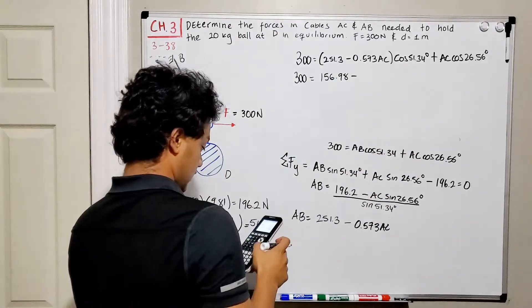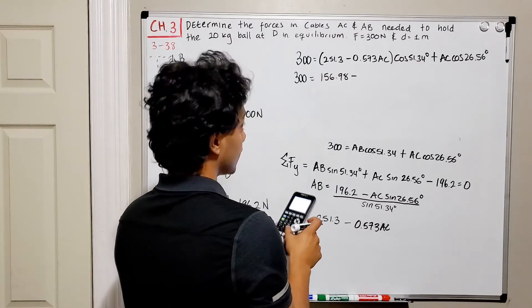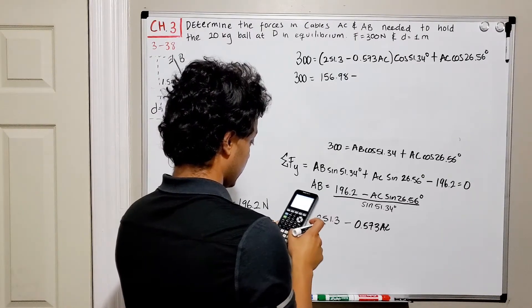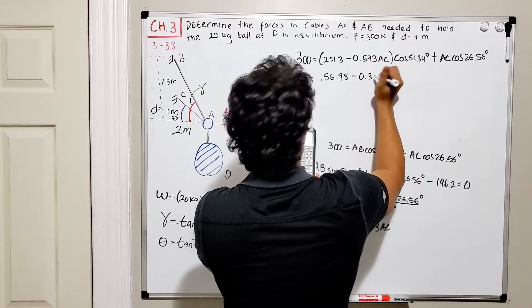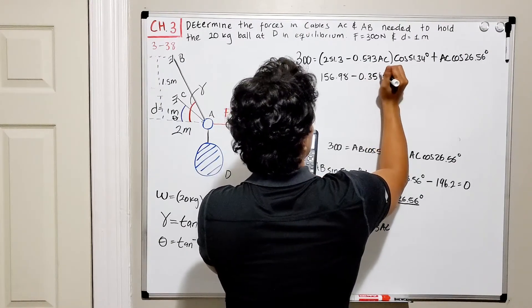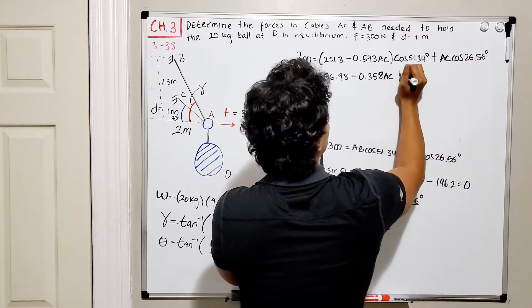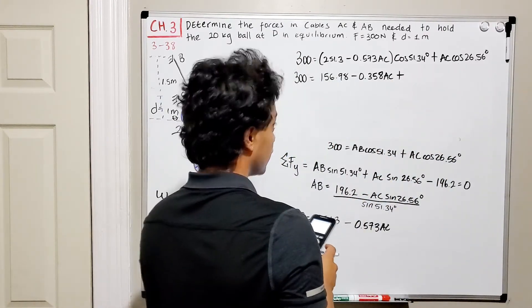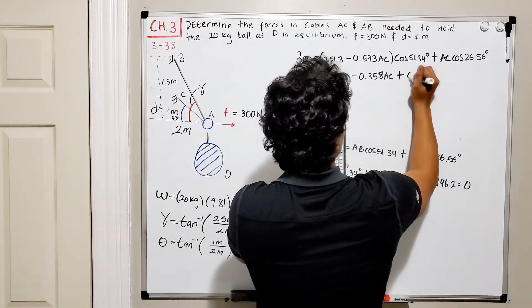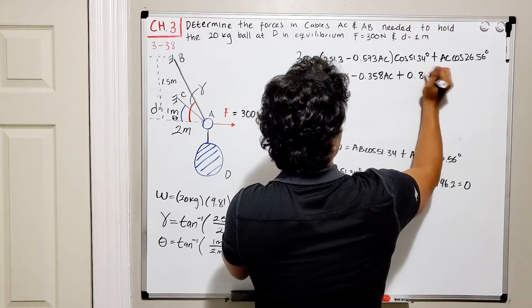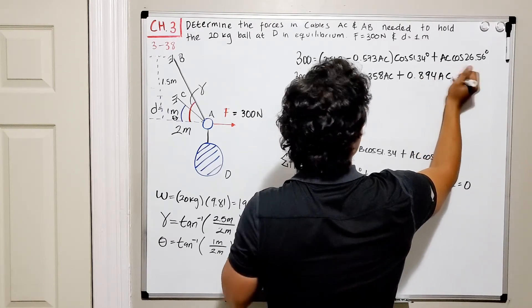So we got 251.3 multiplied by the cosine of 51.34, and it's equal to 156.98 minus 0.573 multiplied by the cosine of 51.34, is equal to 0.358 AC plus cosine of 26.56, which is 0.894 AC.